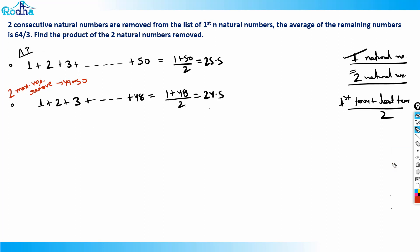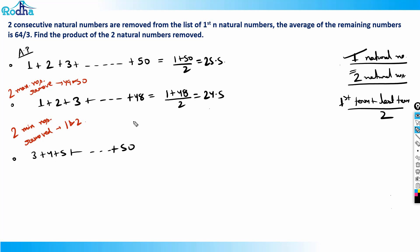Now what happens if I remove two minimum numbers? The two minimum numbers are 1 and 2. So now I start from 3: 3, 4, 5 ... 50. The average is (3 + 50) / 2 = 26.5.